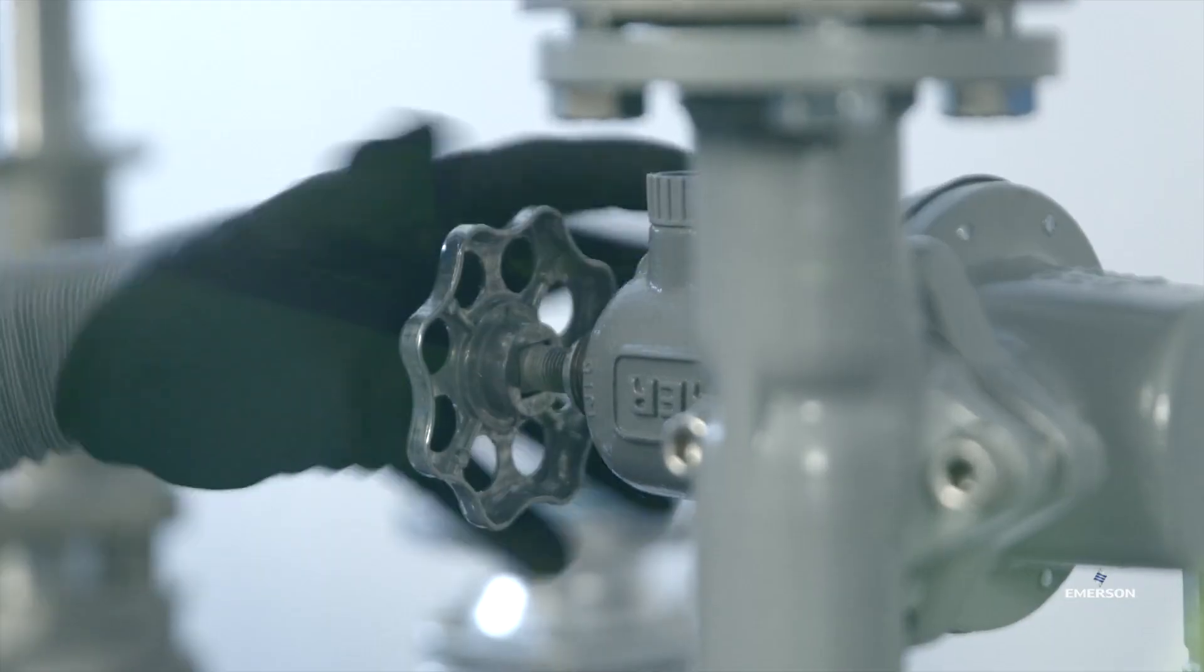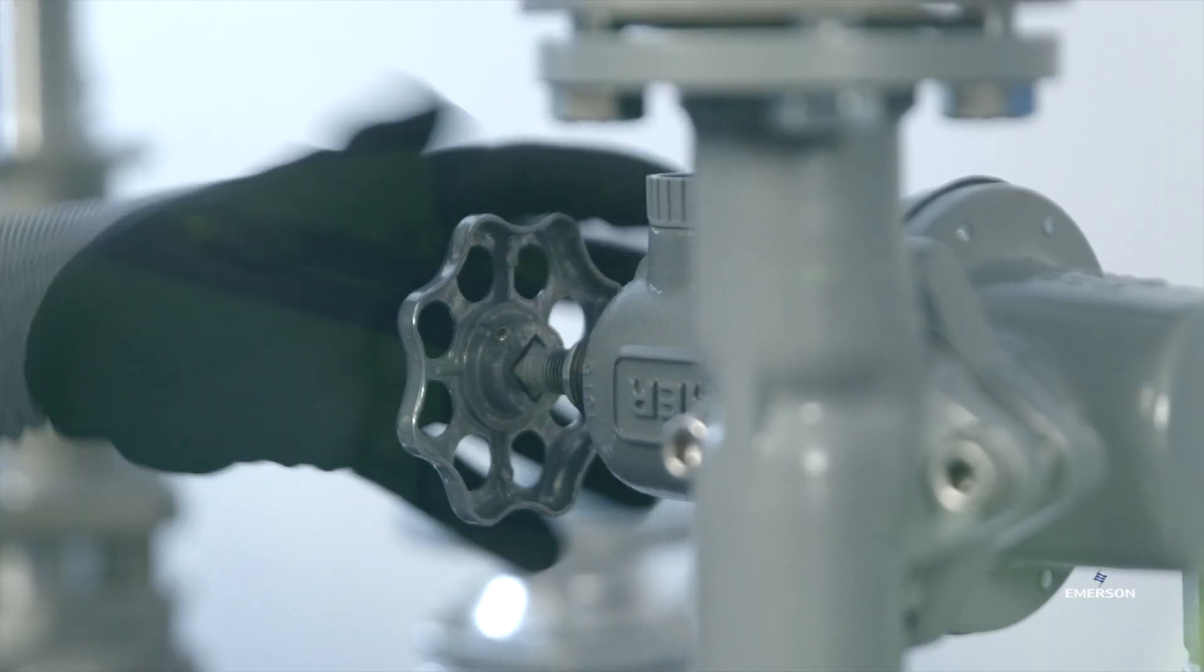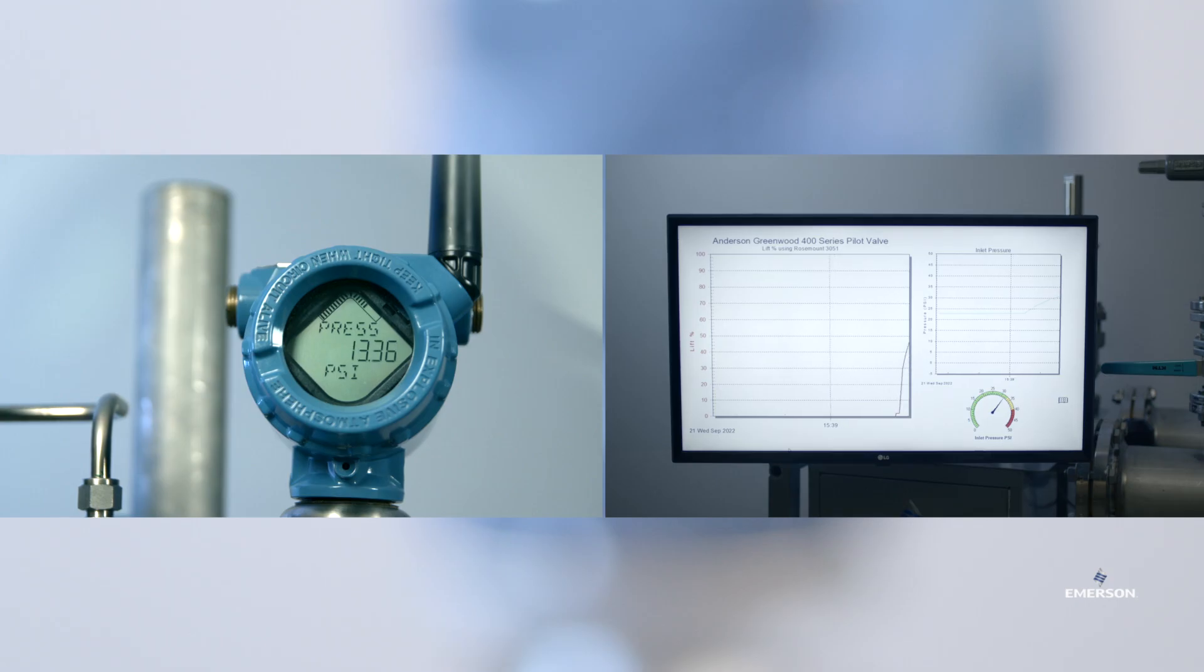As the system pressure approaches set pressure, the pilot will start venting the dome, and that will create a differential pressure across the two transmitter points.